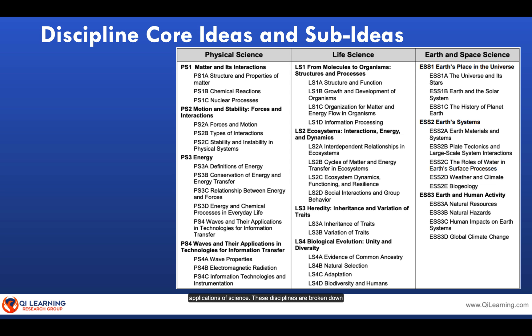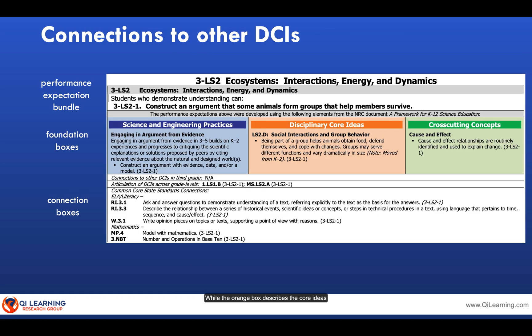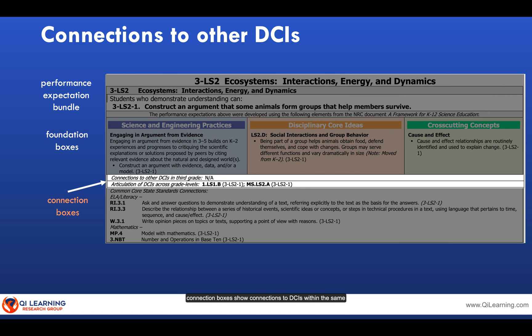These disciplines are broken down even further into core ideas and sub-ideas. While the orange box describes the core ideas and sub-ideas that undergird the performance expectations, the connection boxes show the connections to DCIs within the same grade and indicate the articulation of DCIs across grade level.